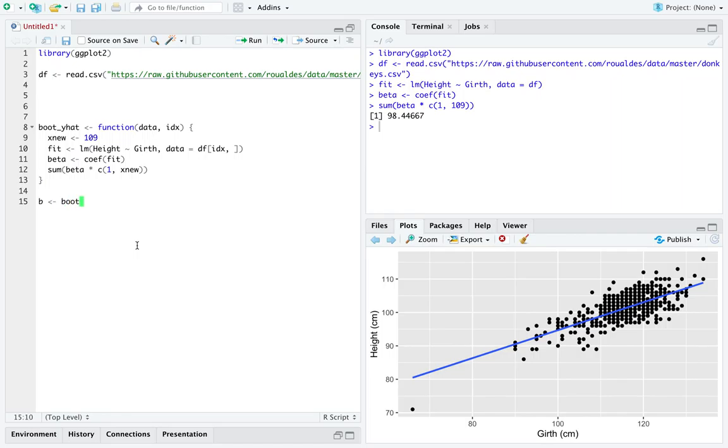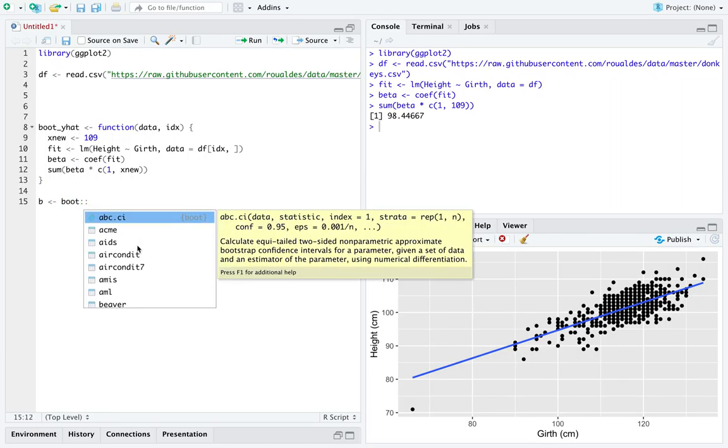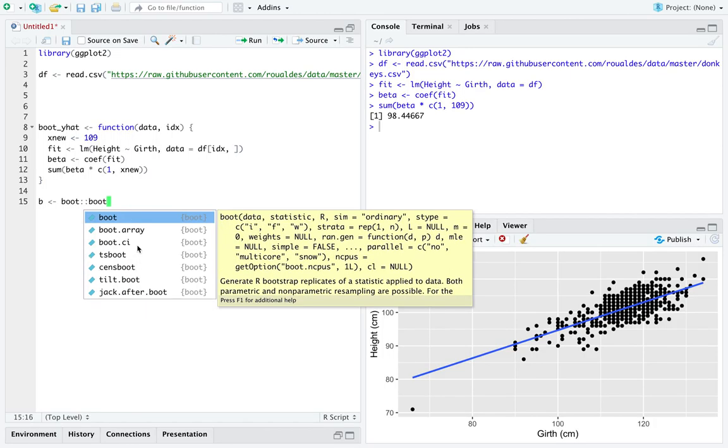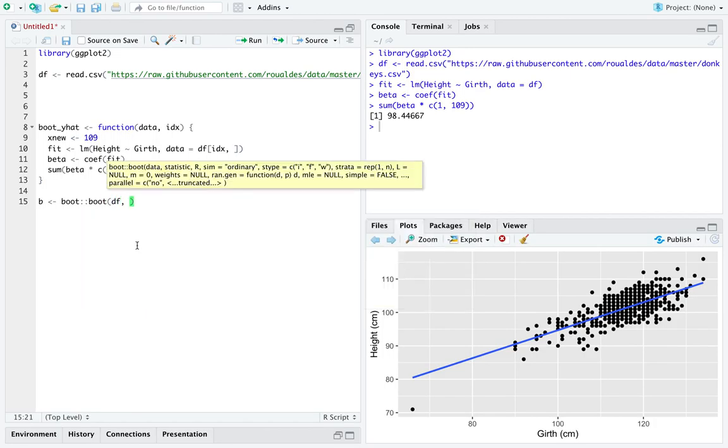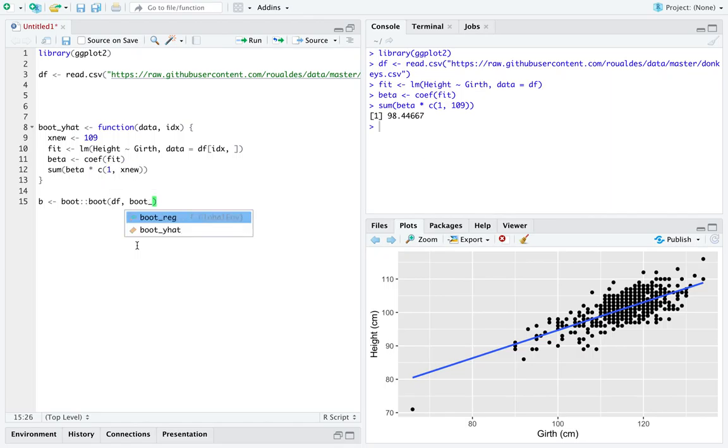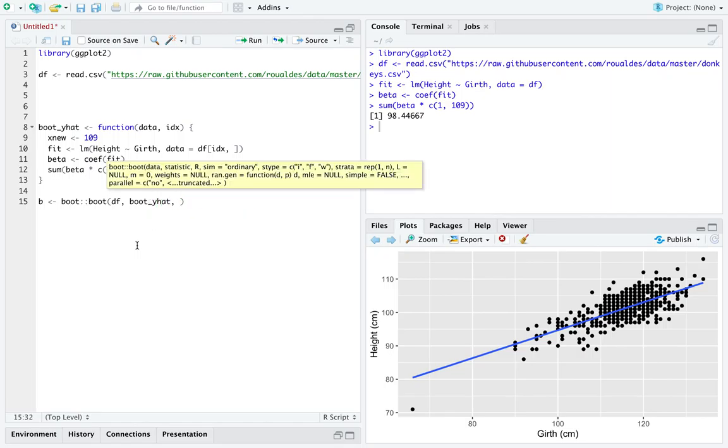We'll create an object b from the library named boot, which contains a function named boot that takes a data frame, some statistic, that is, function to calculate on a data set, and a number of times to resample.